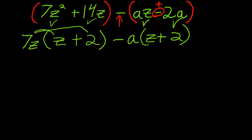Now I happily notice that I have a Z plus two and a Z plus two, one on each side of this polynomial. The Z plus two becomes the GCF. And then I write down the leftovers, 7Z minus A.